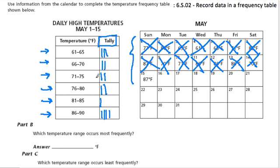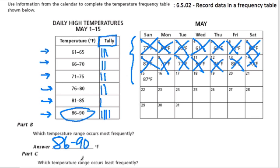So then they'll ask you questions. Which temperature range occurs the most frequently? Well, 86 to 90, because it had the most tallies — it happened the most times. And then it'll ask what temperature range occurs least frequently. That would be 81 to 85.